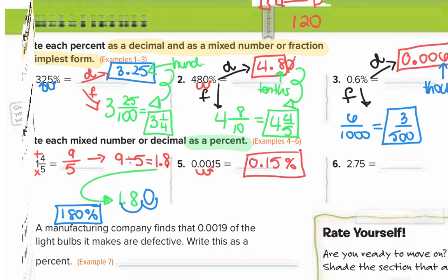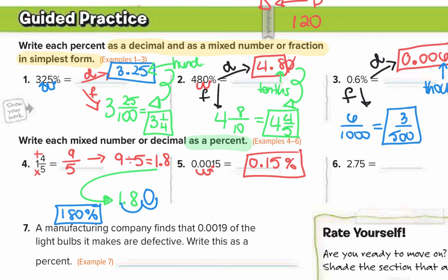Number six is already a decimal, so again all we do is move it two to the right to make it a percent. That's 275 percent.